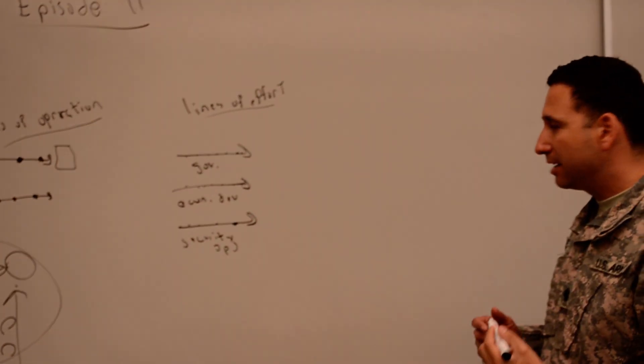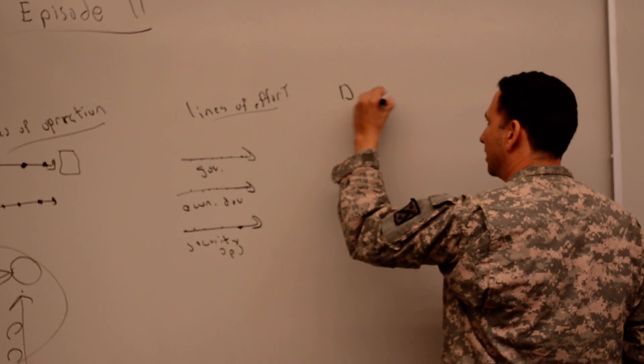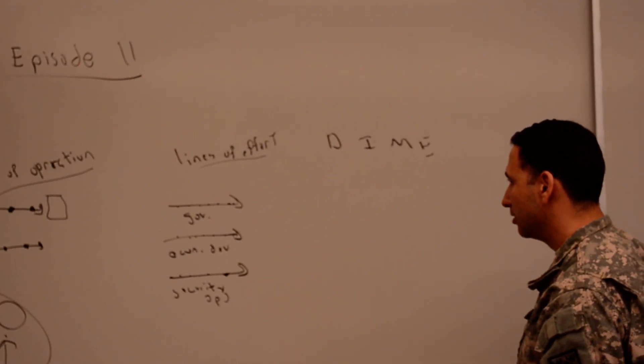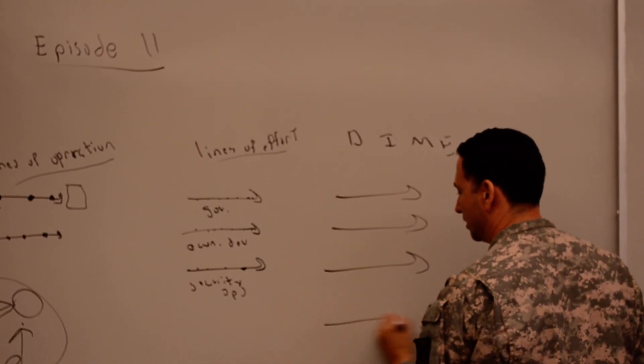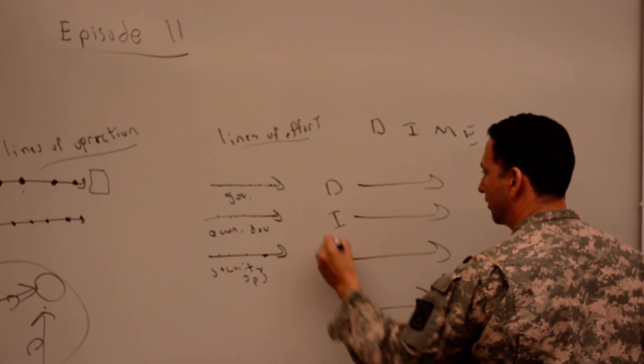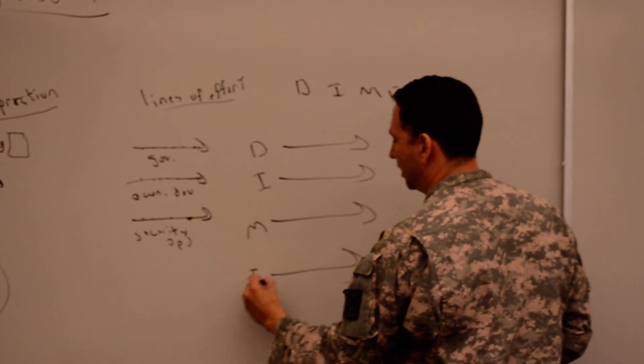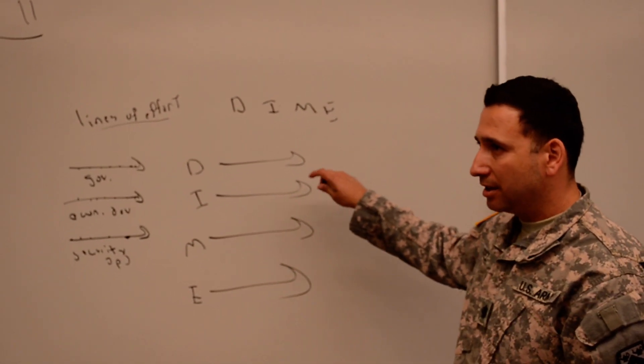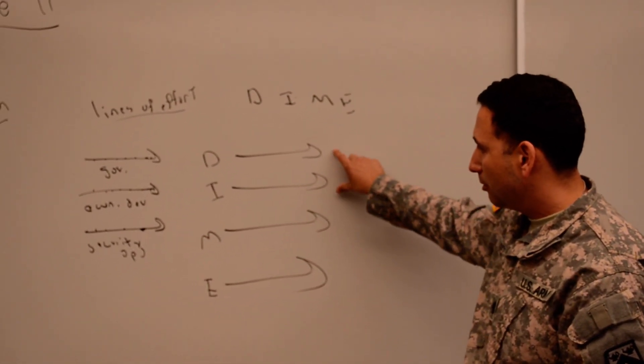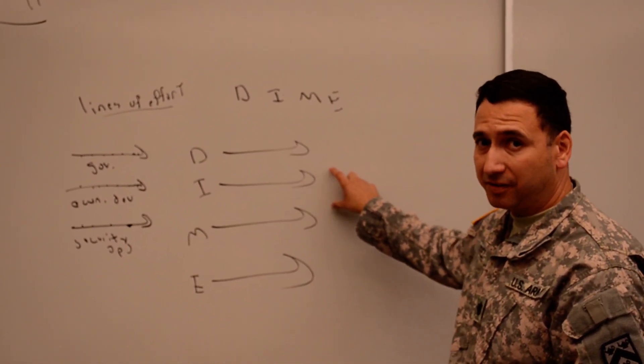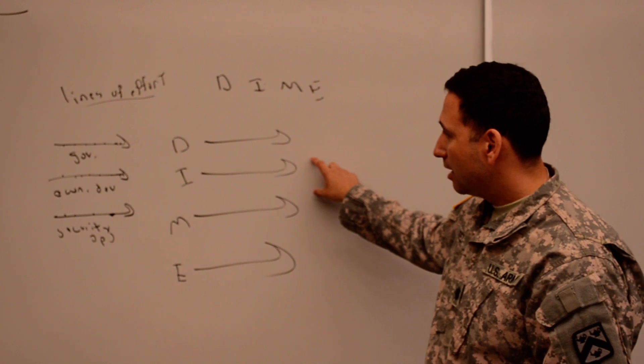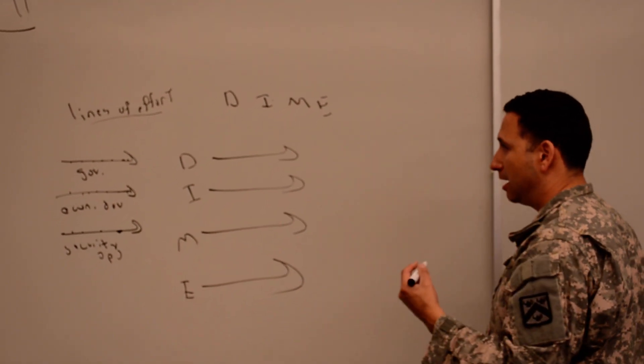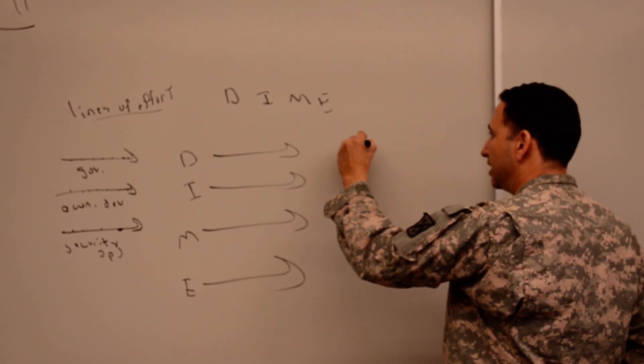Now the question becomes, is it good to use DIME to label these lines of effort? Frequently in Lewis and Clark what we'll see is we'll have four lines of effort. And these will be diplomatic, these will be informational, these will be military, and these will be economic oriented. Not a good idea. First of all, doctrine, JP50, explicitly states that we ought not to do this. And I think the reason is sufficiently important that we ought to reiterate it here.